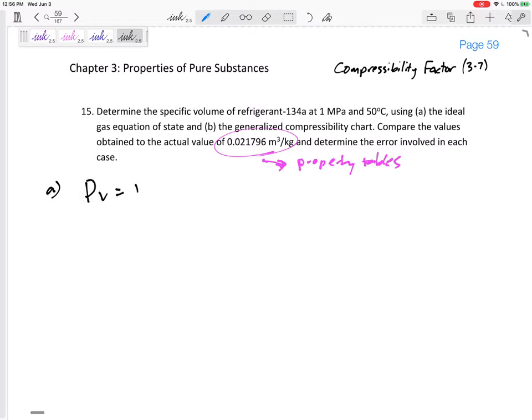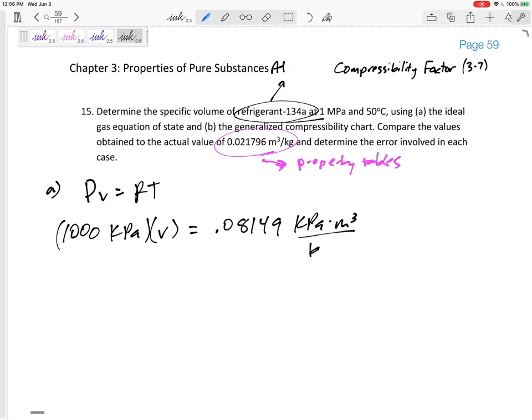So let's just use the ideal gas equation. The pressure is 1 MPa. If you don't mind, I'm going to do 1000 kPa, right? MPa is a thousand times larger than kPa, so a thousand kPa times specific volume. That's what we're looking for. The R for refrigerant 134a is in table A1. The R would be, I've got 0.08149, and instead of using kilojoule, I'm using kPa meter cubed per kilogram K.